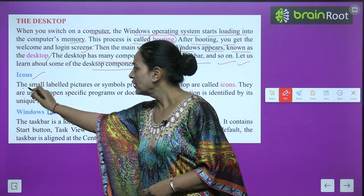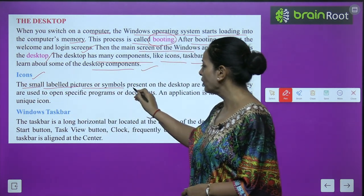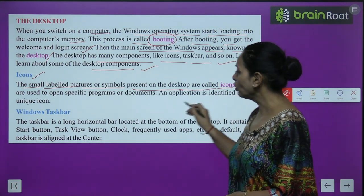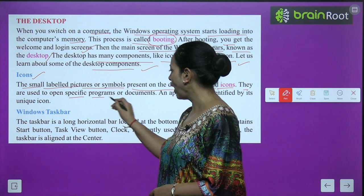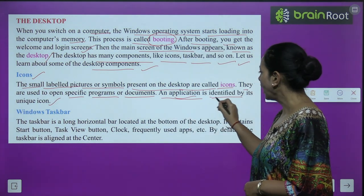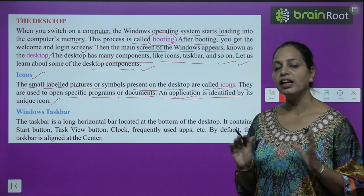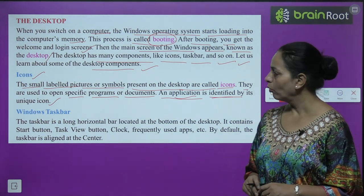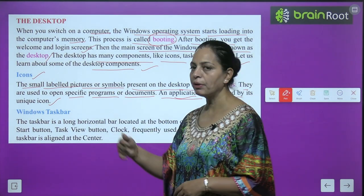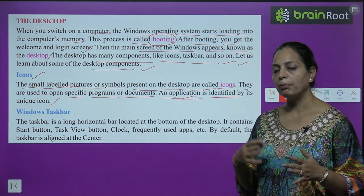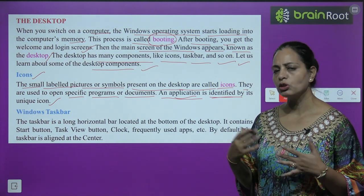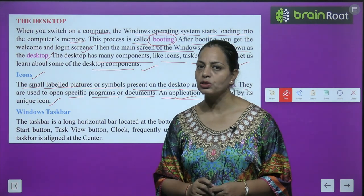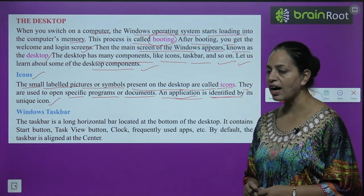The small labeled pictures or symbols present on the desktop are called icons. They are used to open specific programs or documents. Each application is identified by its unique icon. Different symbols and pictures on the desktop help us run our programs according to our requirements — we use these icons.